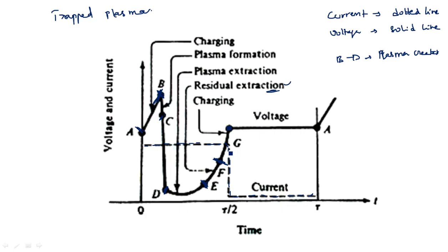When the current goes to the negative peak it does not affect the operation of the TRAPATT diode — the voltage remains stable. But again when the current goes to the positive peak, the entire operation repeats. This is the internal structure and operation of the TRAPATT diode: how plasma is created by the current pulse and then extracted, returning the device to its normal position.